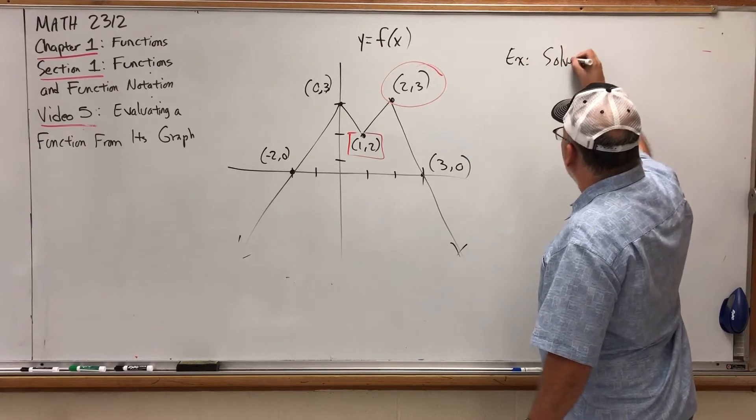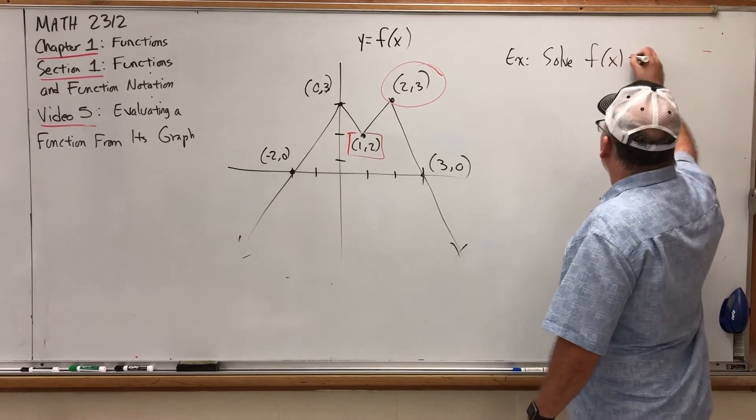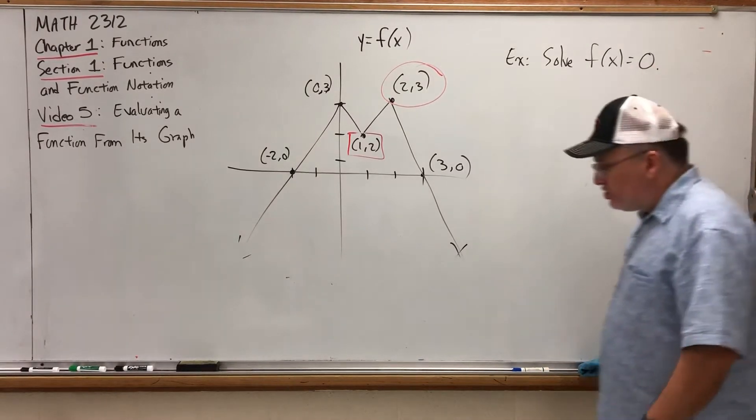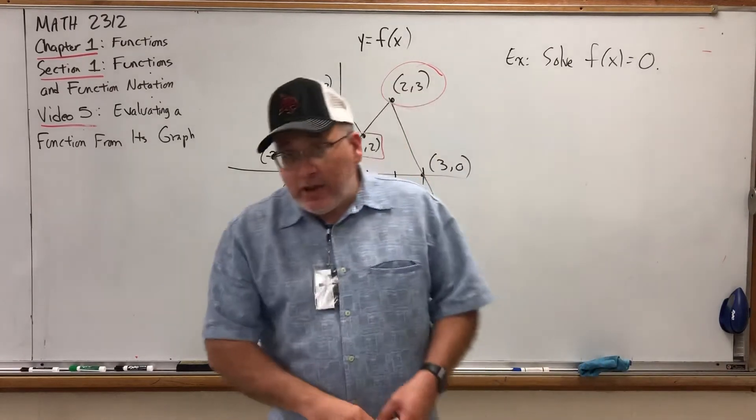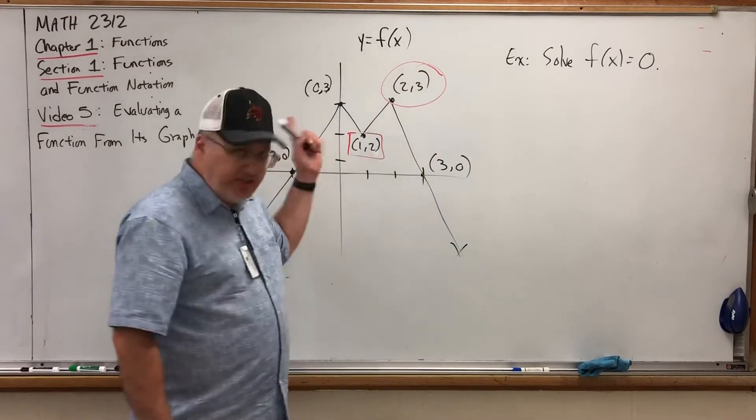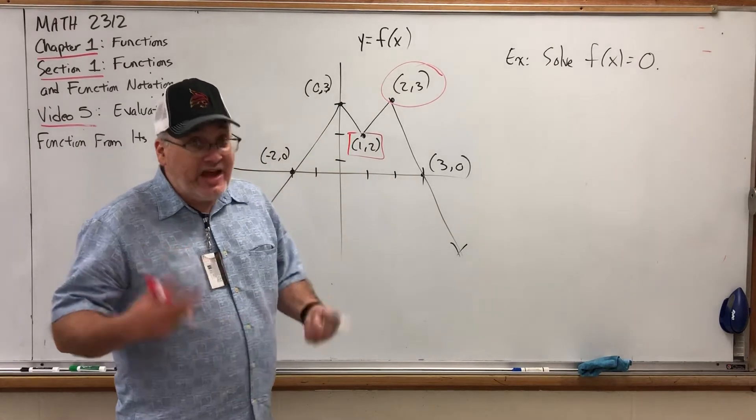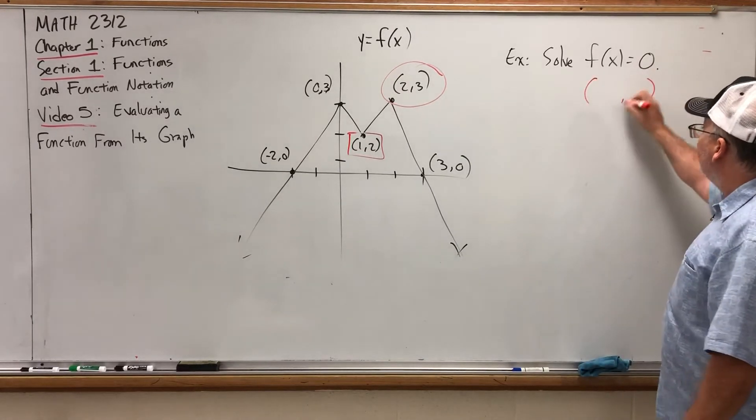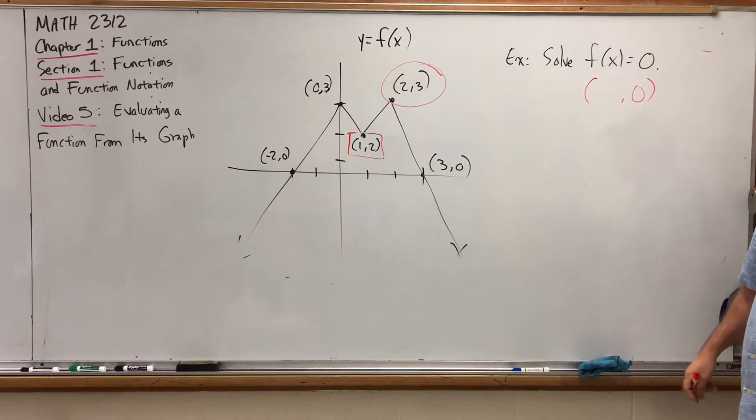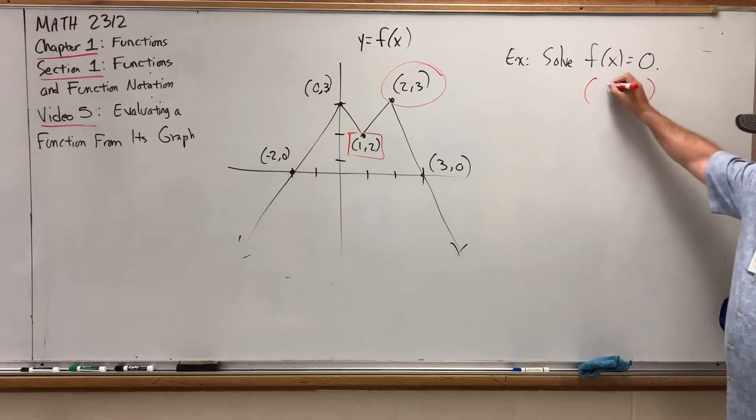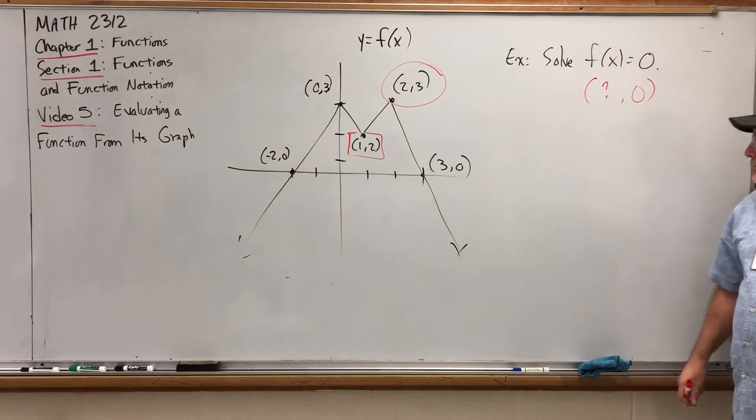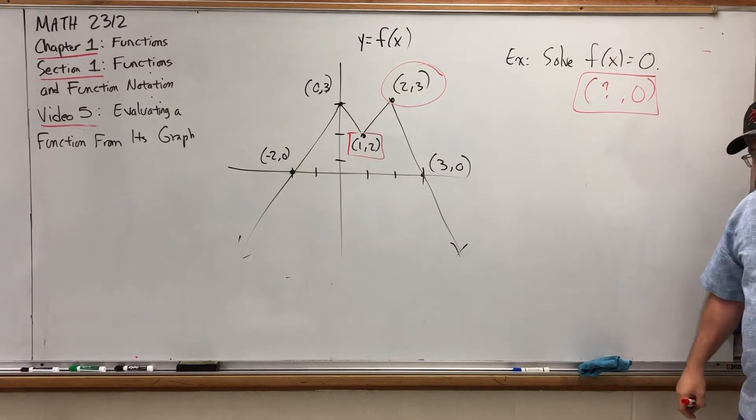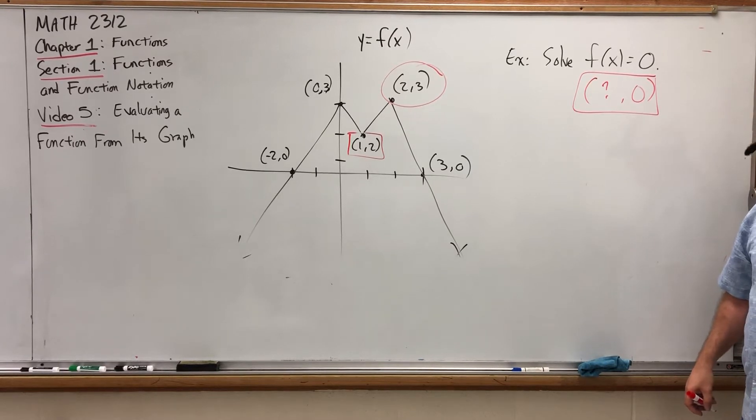For example, I could ask you to solve f of x is equal to 0. Think about what this means in terms of ordered pairs, x's and y's. When you evaluate a function, in the context of x's and y's, the input is the x and the output is the y. Since we were told the output, we're being told the second coordinate, the y-coordinate of the ordered pair. And since we're being asked for the input, we don't know the first coordinate. But we know that we want to find a point that looks like this. Do you see one? Do you see more than one? I do.